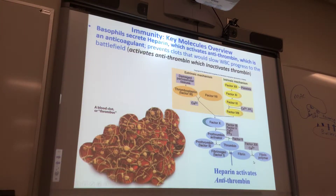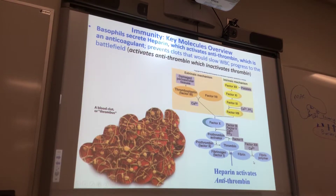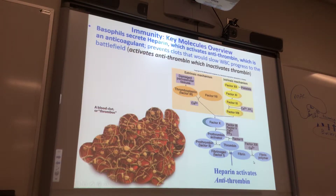Basophils secrete heparin. Heparin activates anti-thrombin — it's an anti-clotting molecule, or anti-coagulant. So it prevents clots in the area where the battlefield is, because if you have clots where bacteria are, you're going to slow white blood cells getting to the battlefield. You want to get as much blood to that area as you can and don't want any clotting slowing blood flow.